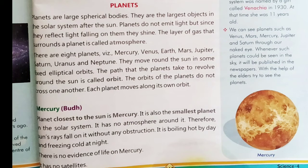Mercury, or Budh, is the planet closest to the sun. It is also the smallest planet. It has no atmosphere around it. Therefore, sun's rays fall on it without any obstruction. It is boiling hot by day and freezing cold at night. There is no evidence of life on Mercury, and it has no satellites.